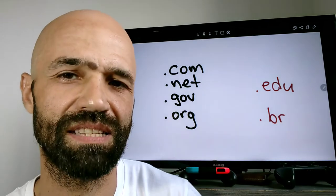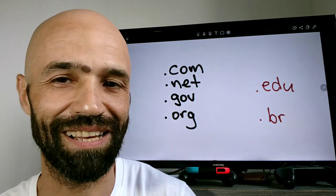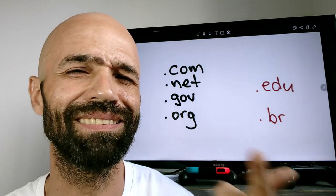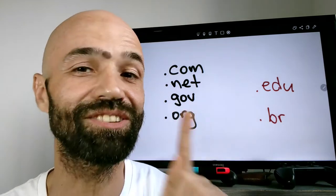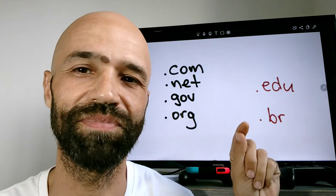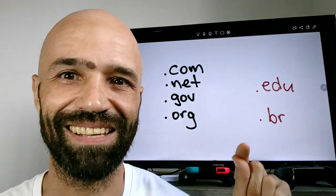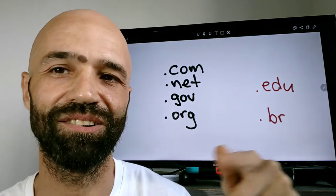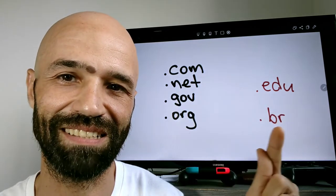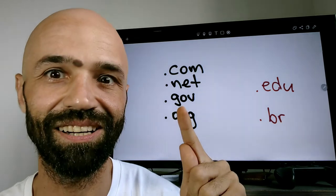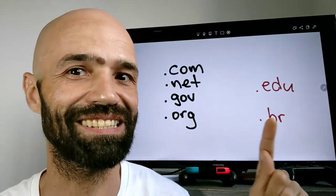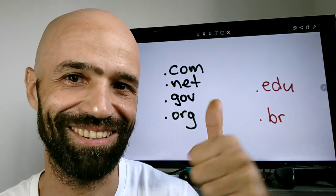No final, se é sites ou emails do Brasil, da Espanha eu acho que tem, da China também tem. E se eu não me engano, da Rússia, que é dot es, né? Da Espanha é es. No Brasil é dot br, então dot com, dot br, dot gov, dot br, dot edu, dot br, ok?